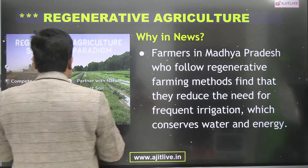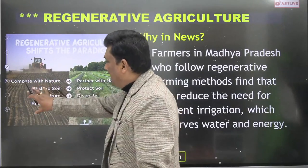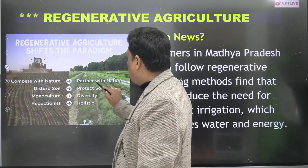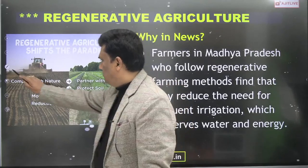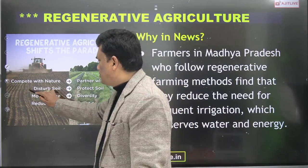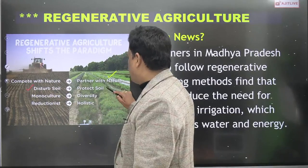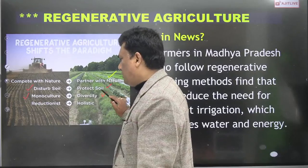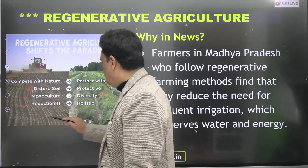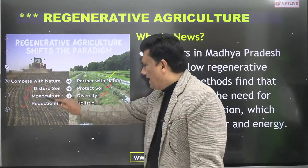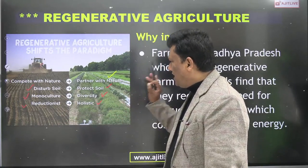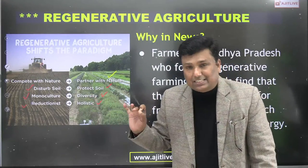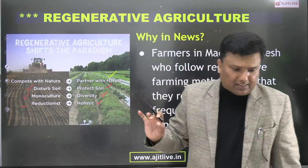A sharp comparison: degenerative agriculture competes with nature, while regenerative agriculture re-partners with nature. Degenerative disturbs soil; regenerative protects soil. Degenerative promotes monoculture; regenerative diversifies crops. Degenerative is reductionist regarding nutrients and water; regenerative is holistic. This is a crystal-clear comparison between degenerative and regenerative agriculture.